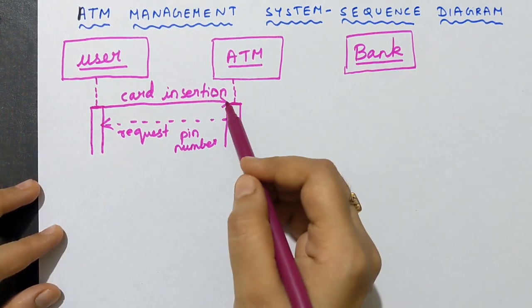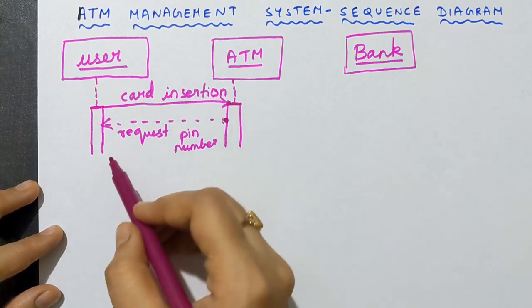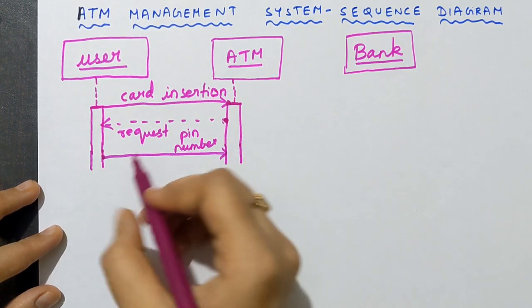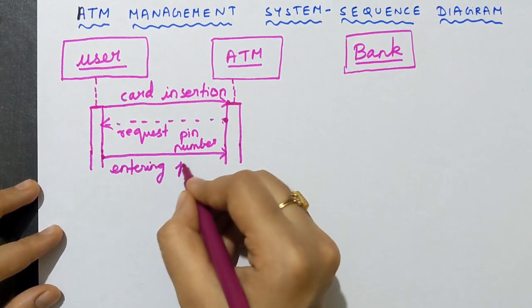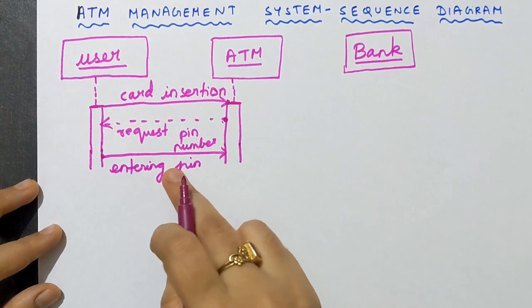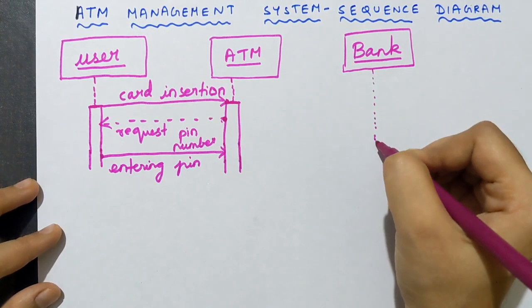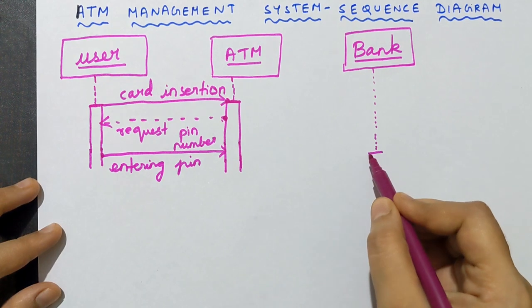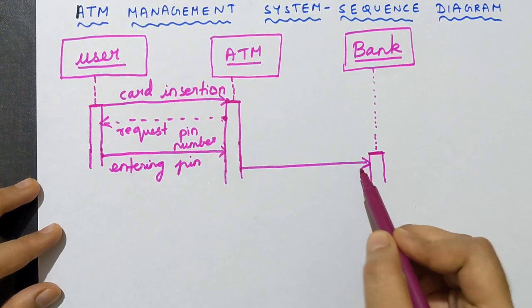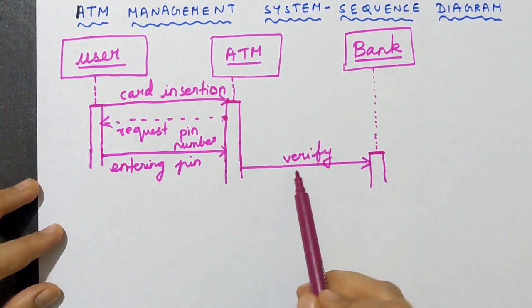The next step is entering the PIN — draw a little lower, draw an arrow from user to ATM and label it 'enter PIN.' After entering the PIN number, we draw a line below that arrow. From ATM to the bank, verification is happening — so we draw an arrow from ATM to bank and label it 'verifying.' After the user enters the PIN, the verifying step happens between ATM and bank.